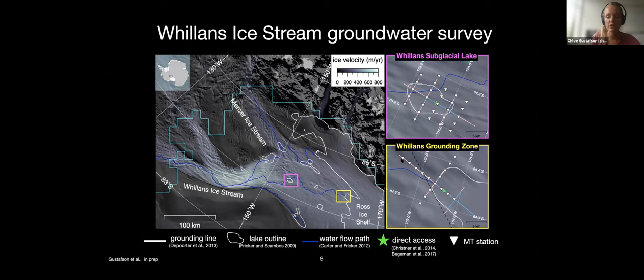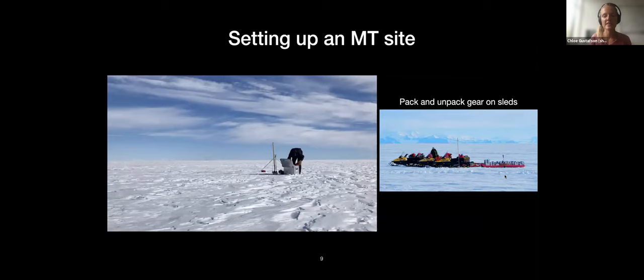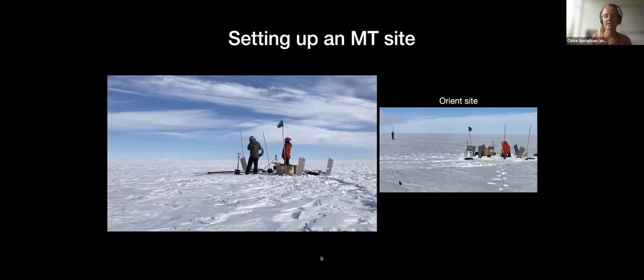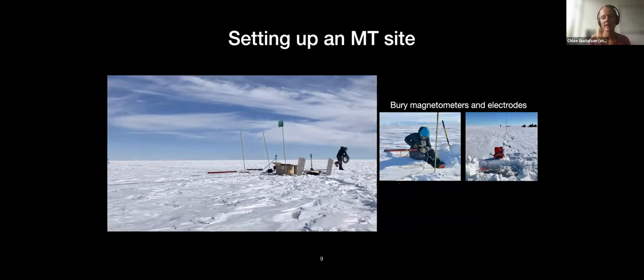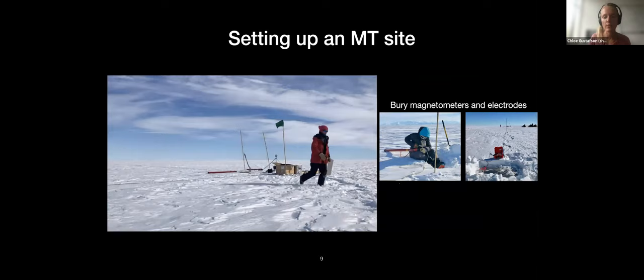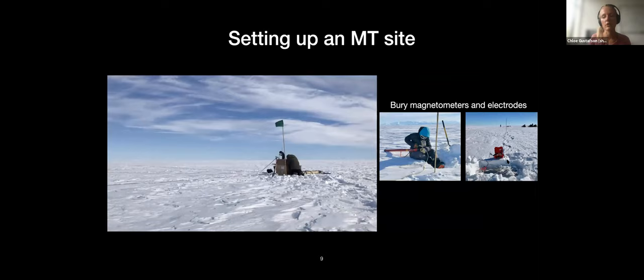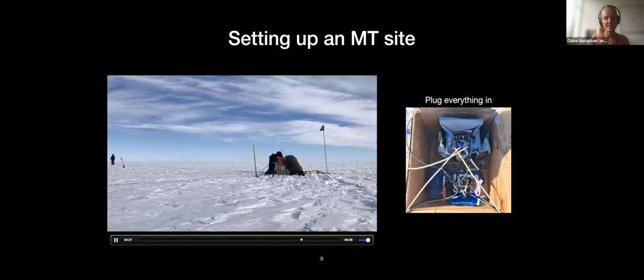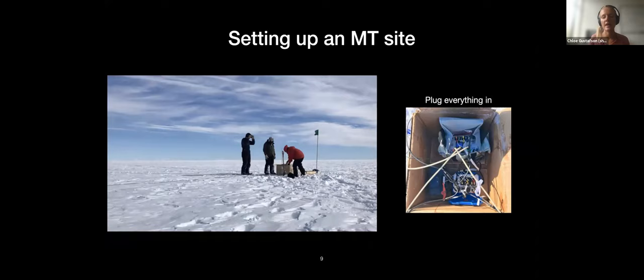The other survey site was the Willans grounding zone, with a river connecting the lake down to the grounding zone and waters to the ocean. Before getting into results, I wanted to show what it looks like to set up an MT station. We unpack our gear, orient the site using a compass, and then bury the magnetometers and electrodes in the snow — the same procedure for any land MT site. In Antarctica, we use special electrode equipment to deal with the high resistivity of snow. You leave the instrument out for maybe a night or several days depending on the frequency content you're interested in.